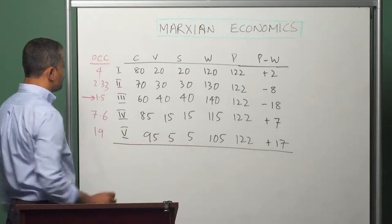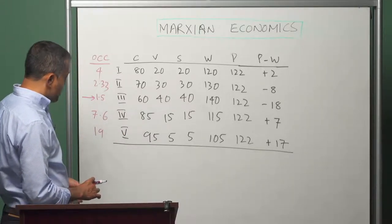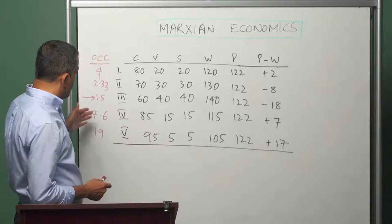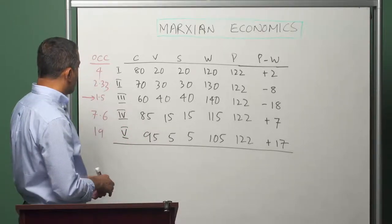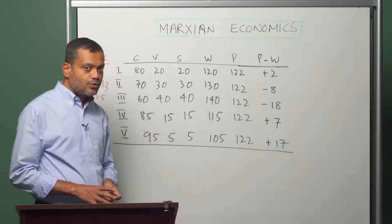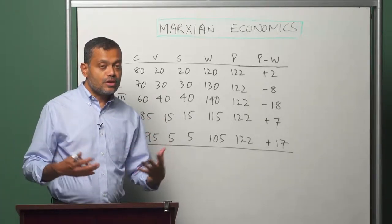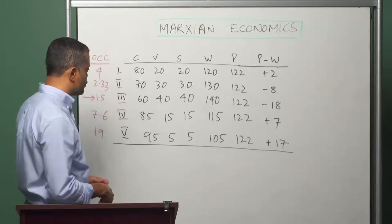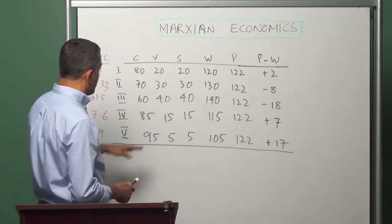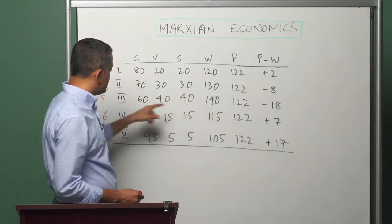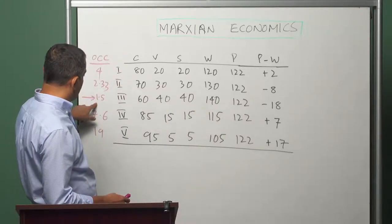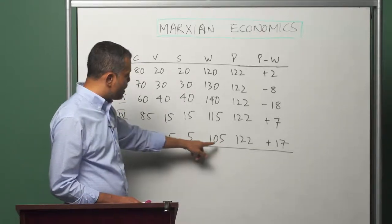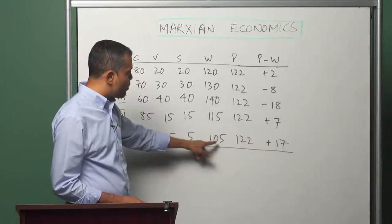The sector with the lowest organic composition of capital is sector 3. Recall what it implies about surplus value generated: a sector which has low organic composition of capital generates more surplus value per unit of capital invested than a sector which has high organic composition of capital, and that is reflected here. The total value of the output produced in sector 3 is 140 — that is the lowest organic composition of capital sector. On the other hand, the total value of the output produced in sector 5 is 105, which is the highest organic composition of capital sector.